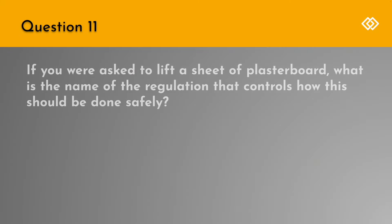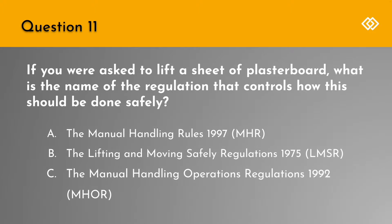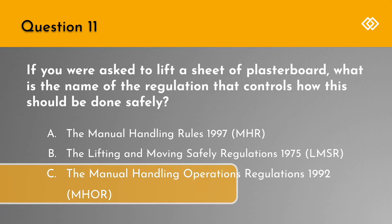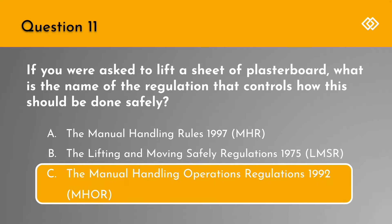Question 11. If you were asked to lift a sheet of plasterboard, what is the name of the regulation that controls how this should be done safely? A. The Manual Handling Rules of 1997. B. The Lifting and Moving Safely Regulations of 1975. Or C. The Manual Handling Operations Regulations of 1992. The correct answer is C. The Manual Handling Operations Regulations of 1992.